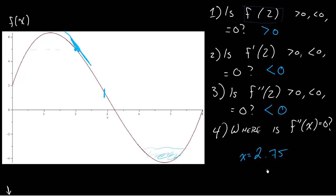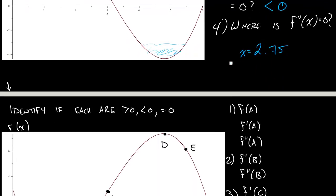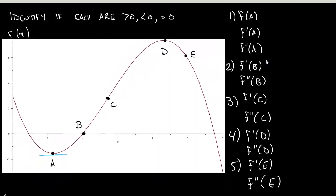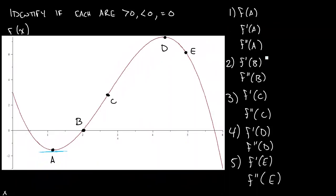So let's look at an example where we look at a lot of different points. It can be easy to get bogged down, but just focus: f is asking you for the output value; f prime is asking you for the slope of the tangent line; f double prime is asking you for the concavity.